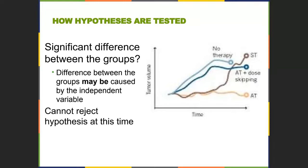Some of you may have heard about vaccines going through stage three testing. Stage one is really about whether the substance can be in the body without causing problems. Stage two is about safety with fewer people. Stage three is a large clinical trial where we look at the effectiveness of the drug or intervention.